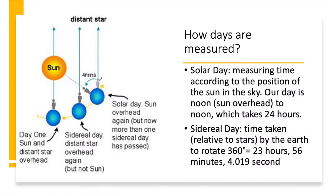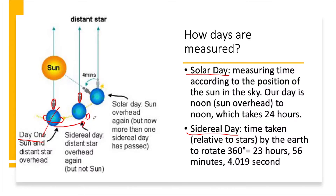Before going to this typology, let us discuss certain concepts: solar day and sidereal day. Suppose the Sun is overhead right now on day one. The Earth will take a complete rotation on its axis, but it also moves along its orbit to a new position on day two. In that new position, the Sun will not be overhead, because the Earth's position has changed relative to the Sun.